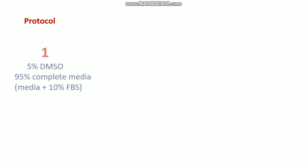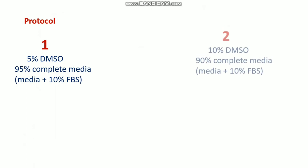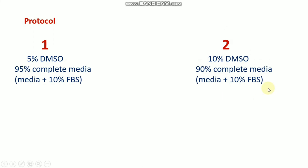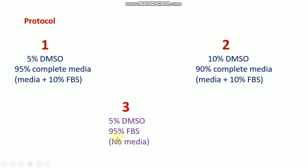There are different protocols available for the cryopreservation process. The first is 5% DMSO with 95% complete media containing 10% FBS. The second is 10% DMSO and 90% complete media. The third protocol — which I personally use — is 5% DMSO and 95% FBS with no media. This third protocol has a very high cell recovery rate compared to the other two protocols and works very well.